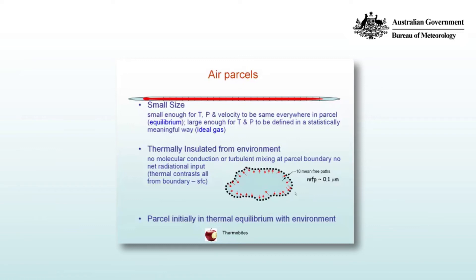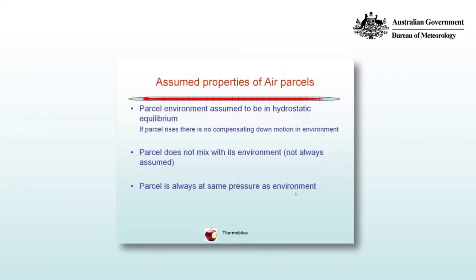The parcel must initially be in thermal equilibrium with the environment, and its temperature will change depending on what we do to the parcel. The parcel environment is assumed to be in hydrostatic equilibrium, so if the parcel rises, there is no compensating downward motion in the environment. The parcel doesn't mix with its environment — that's not always assumed, but it will be for the moment.